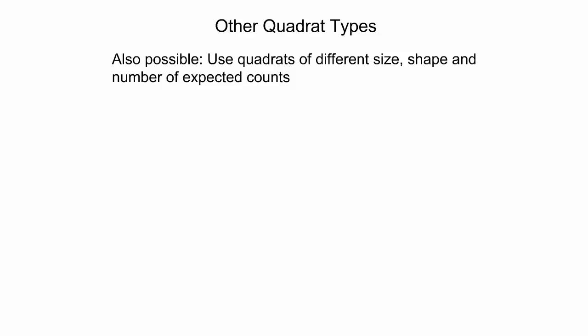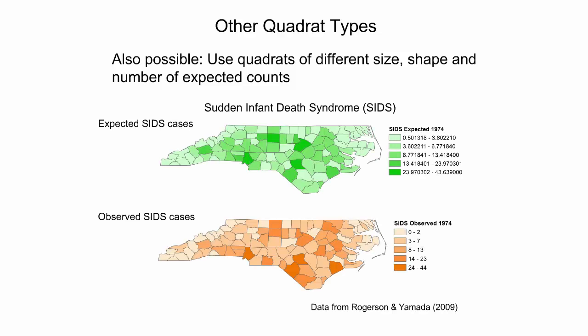It is also possible to use event counts that are already summarized by region, such as counties. Such quadrats are then of different size and shape. Quadrats may even vary by the number of expected events due to factors that are known to affect the occurrence of this type of event. An example is the spatial analysis of sudden infant death syndrome cases, which are expected to be higher in counties that have a higher number of births.